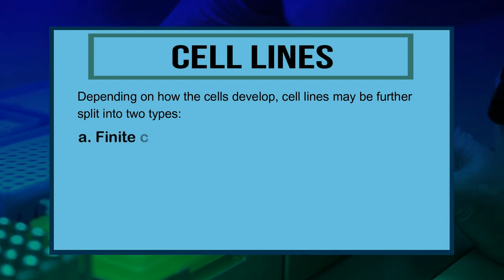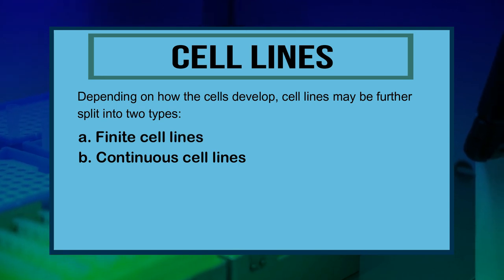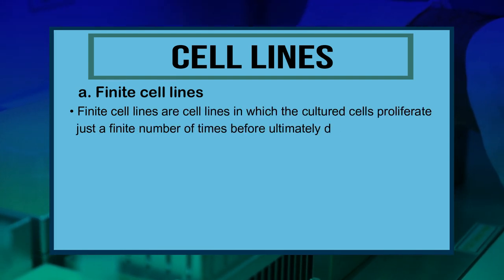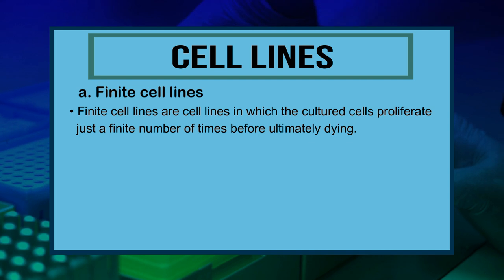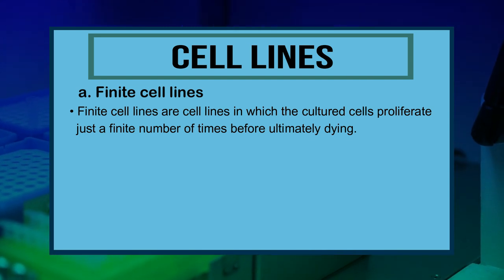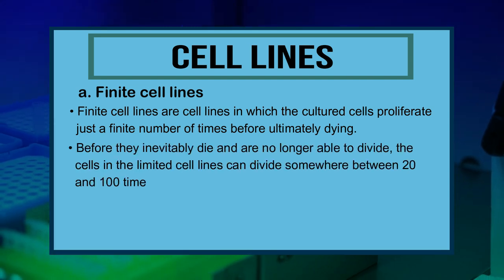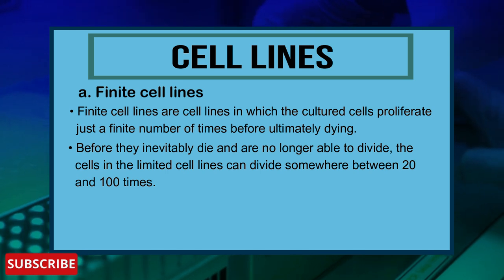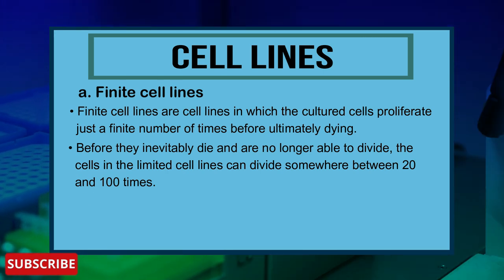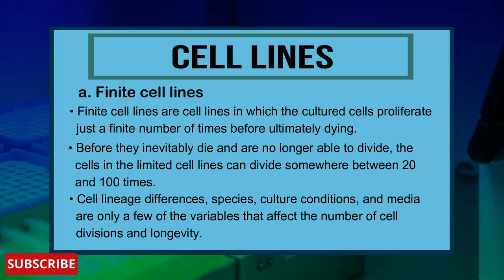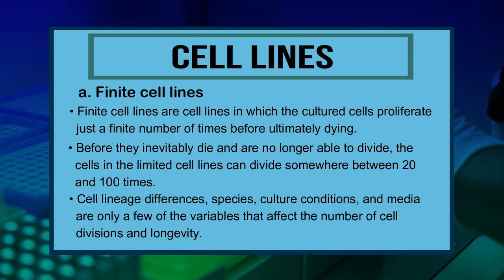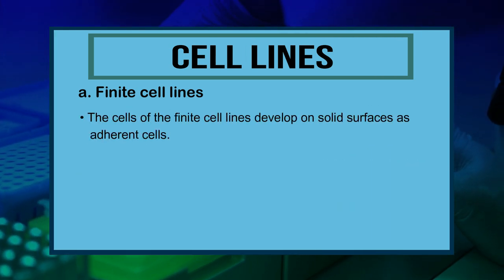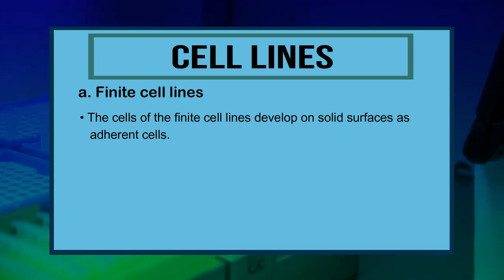Number one is finite cell lines, and number two is continuous cell lines. Finite cell lines are those in which cultured cells proliferate only a finite number of times before ultimately dying. The cells in finite cell lines can divide somewhere between 20 and 100 times. Cell lineage, species, cell conditions, and media are variables that affect the number of cell divisions. Finite cell lines develop on solid surfaces as adherent cells.